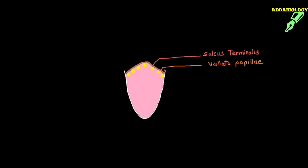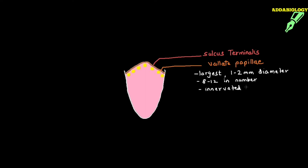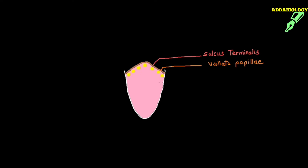Vallate papillae are the largest papillae — they are 1 to 2 mm in diameter and 8 to 12 in number. This is very important and not given in NCERT, but important for NEET: they are all innervated by the glossopharyngeal nerve. This covers the key details of vallate papillae.